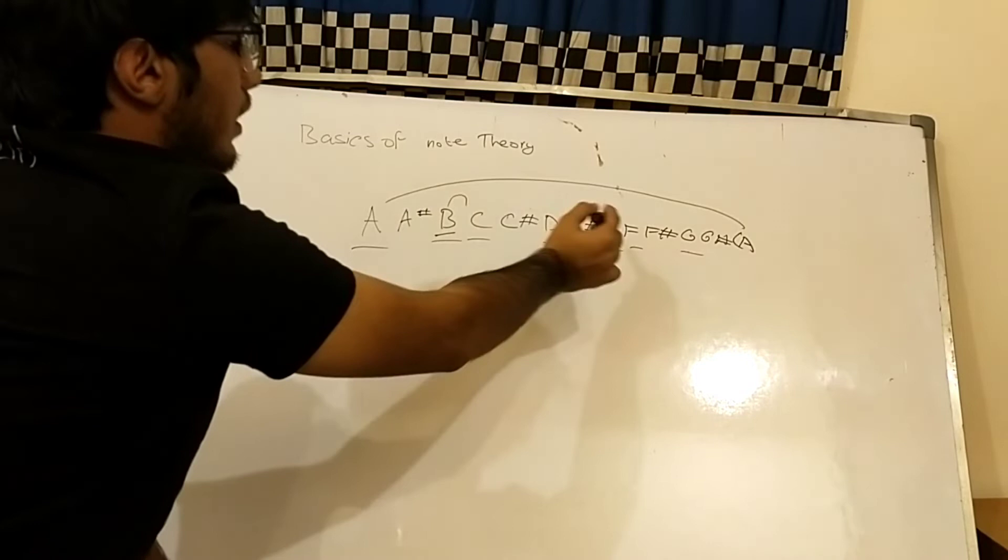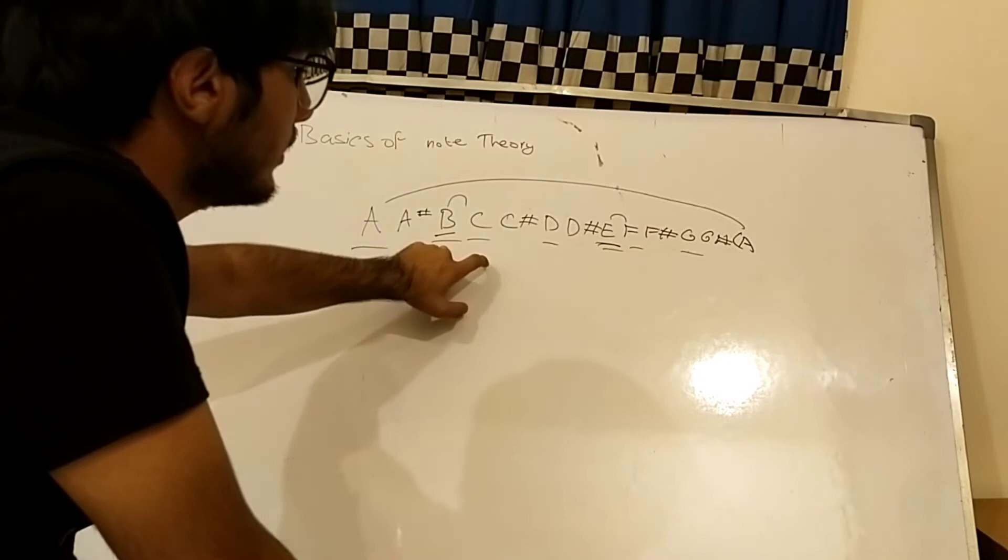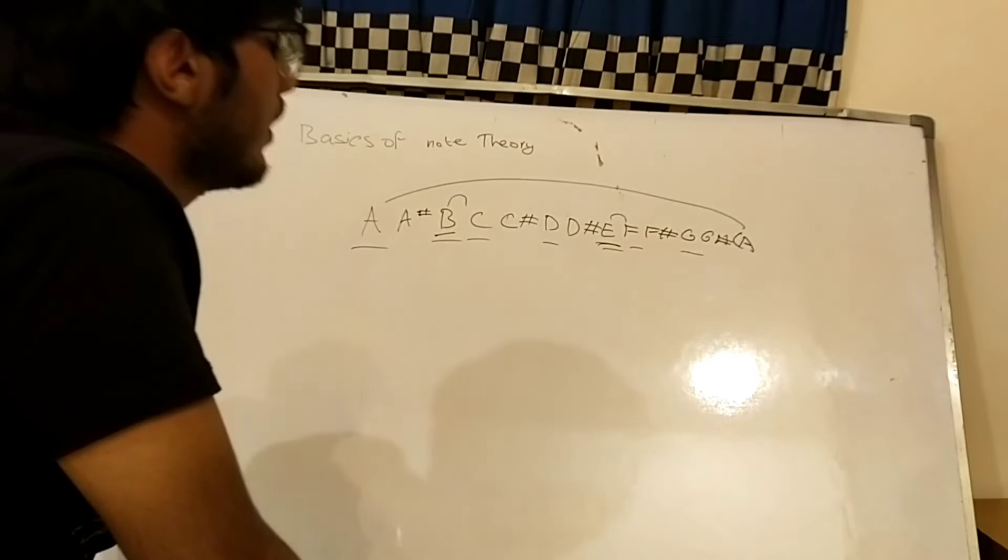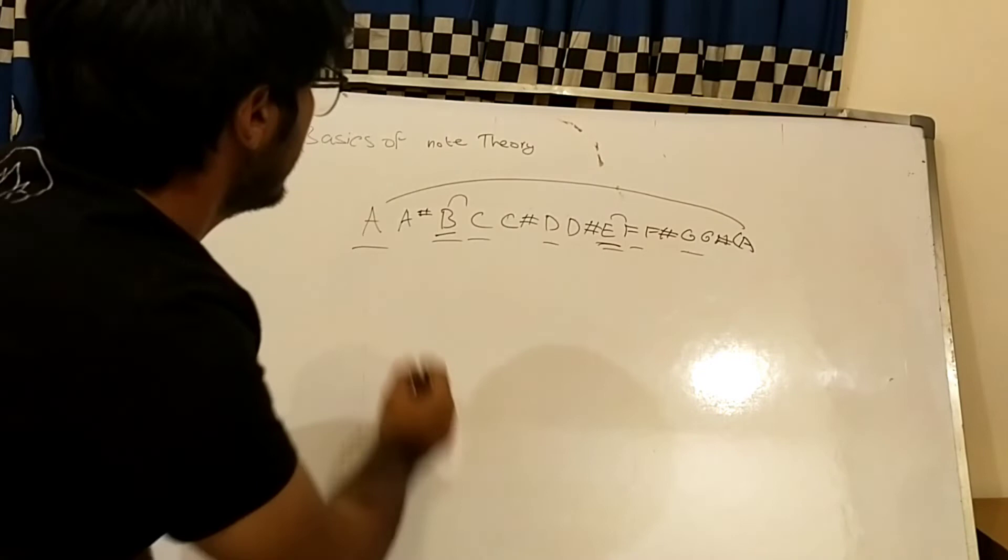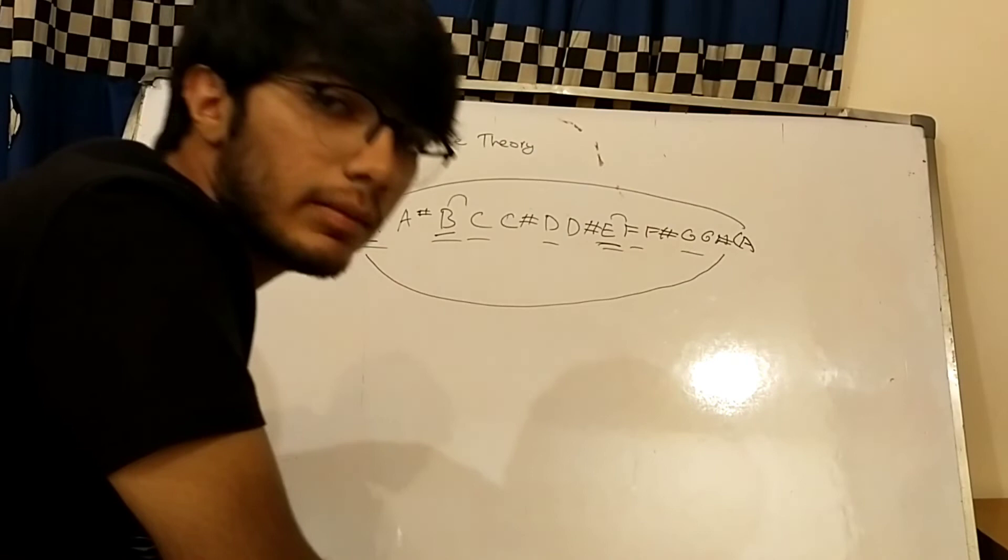So even on your guitars, if you take an example of the A string, the A string from the open string note will be A, and all the way to the 12th fret will be G sharp, and then on the 12th fret will be A again.